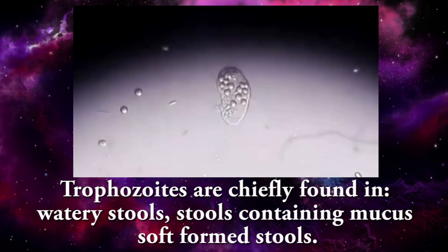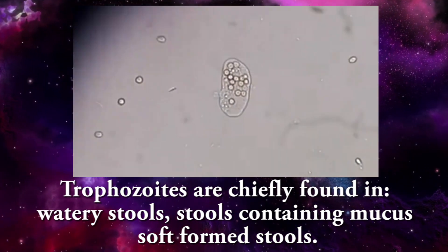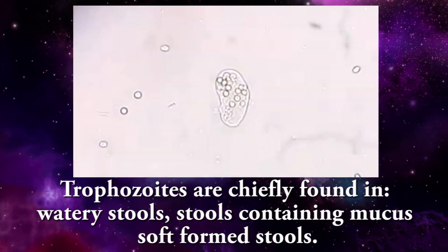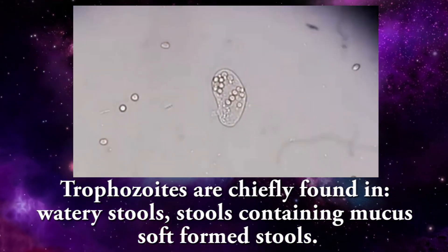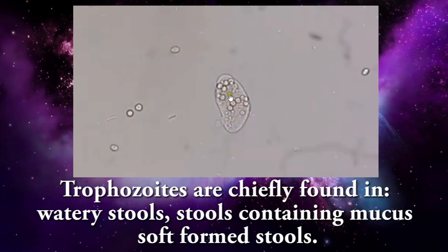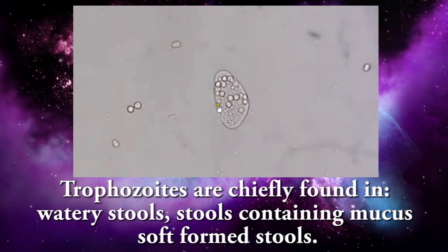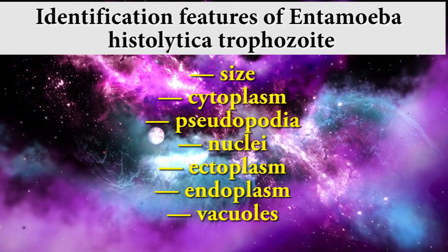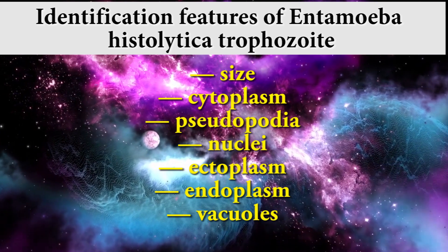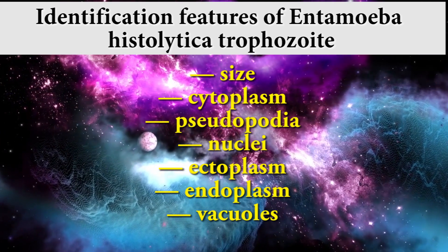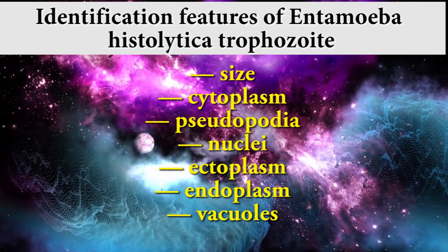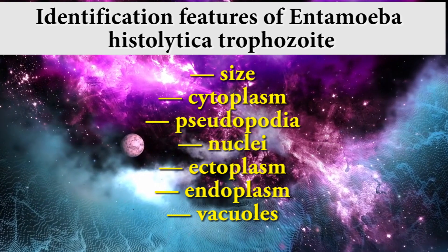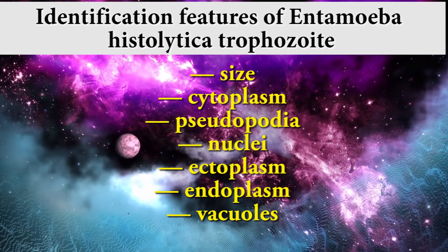Trophozoites are chiefly found in watery stools containing mucus or sub-formed stools. The following features are useful for the identification of the motile form of Entamoeba histolytica trophozoite.